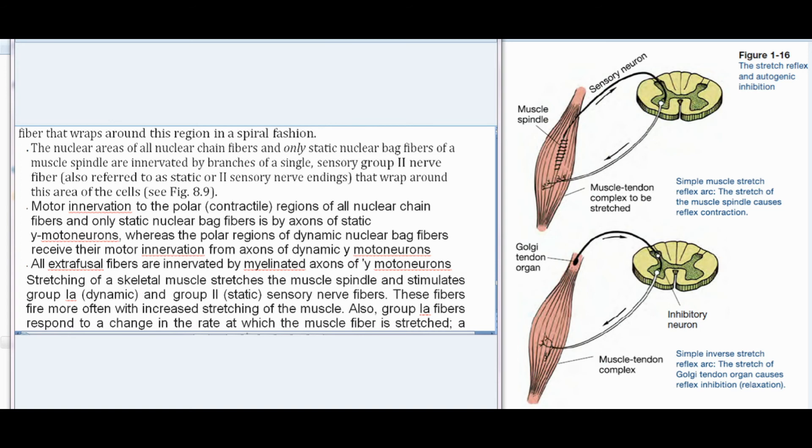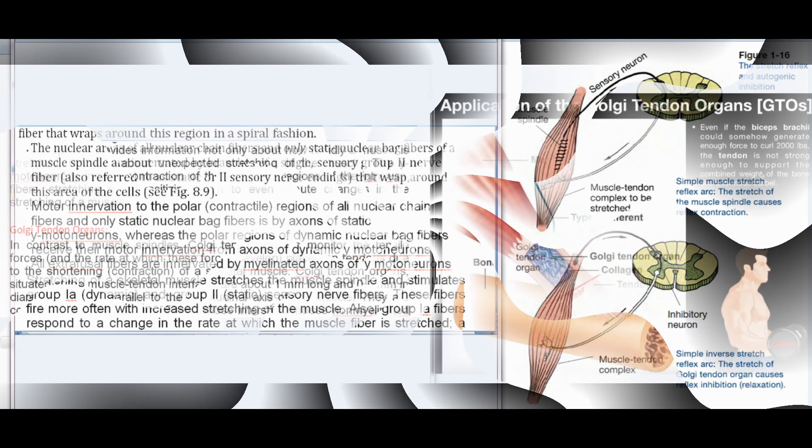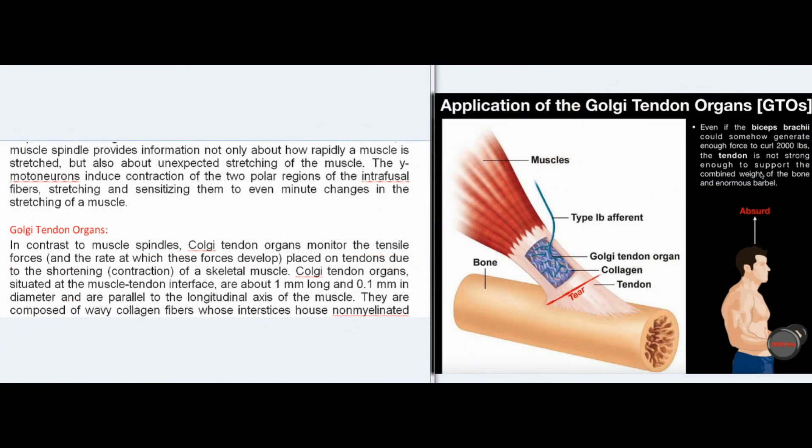All extrafusal fibers are innervated by myelinated axons of alpha-motoneurons. Group IA fibers fire more often with increased stretching of the muscle and respond to a change in the rate at which the muscle fiber is stretched. A muscle spindle provides information not only about how rapidly a muscle is stretched, but also about unexpected stretching of the muscle. The gamma-motoneurons induce contraction of the two polar regions of the intrafusal fibers, stretching and sensitizing them to even minute changes in the stretching of a muscle.